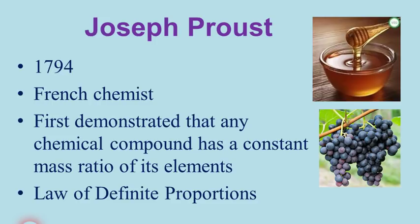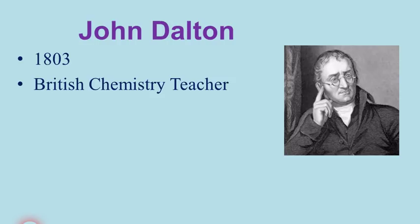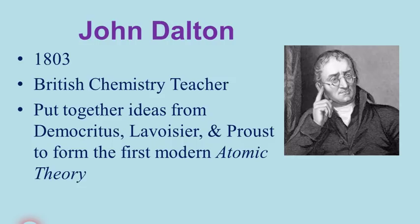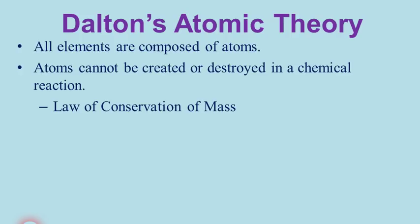Just a few years later, in 1803, a British chemistry teacher named John Dalton put all these ideas together — the concepts from Democritus, Lavoisier, and Proust — and explained that the most reasonable explanation was that matter is made of tiny particles called atoms. His atomic theory has four main parts. First, all elements are composed of atoms. Second, atoms can't be created or destroyed in a chemical reaction — based on Lavoisier's law of conservation of mass. Dalton explained that mass is conserved because atoms just get rearranged in a reaction.